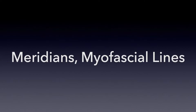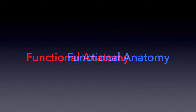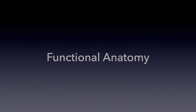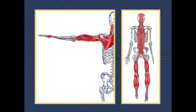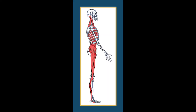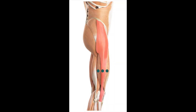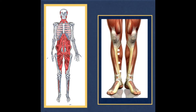In this video I want to talk to you about meridians, myofascial lines, and functional anatomy. In these images we can see that the myofascial lines look a lot like the meridians. The myofascial lines can help us to better understand much more about acupuncture point actions and why points work the way they do.